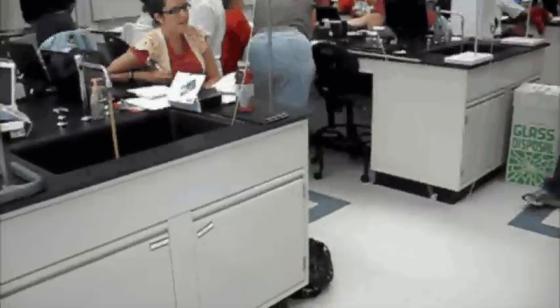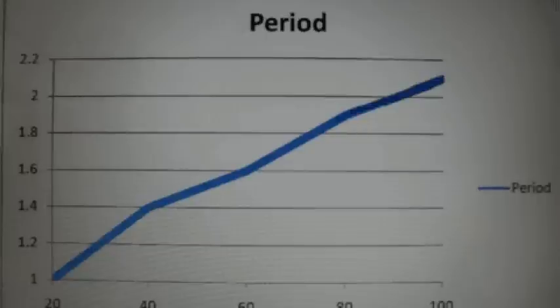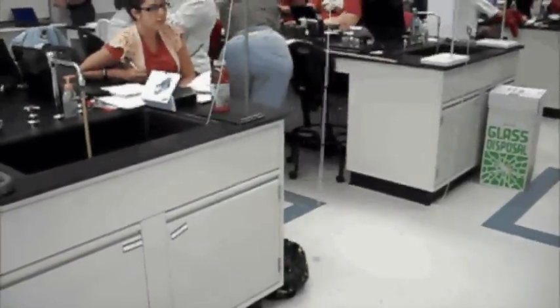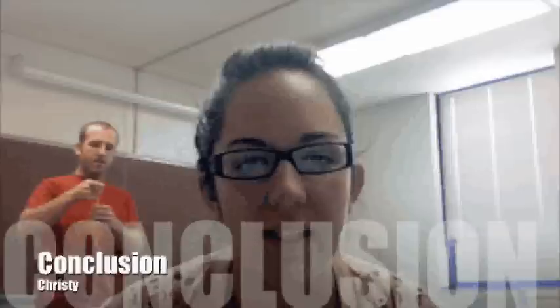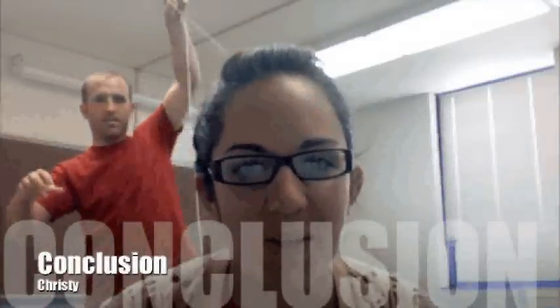You do that over and over again at the 40, 60 centimeter, 80 centimeter, and one meter length. After conducting our experiment, we found that the number of swings decreases as we increase the length of the string on the pendulum.